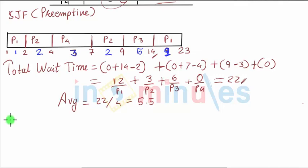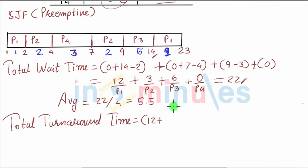Similarly, if you talk about total turnaround time, remember we have clearly said it is the wait period plus the burst period. Wait period we have calculated, so let's go with it: 12 plus the burst of P1 which is 10, next is 3 plus burst of 4, plus 6 plus burst which is 5, plus 0 plus burst of 3.